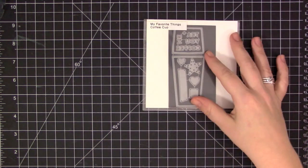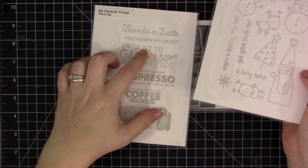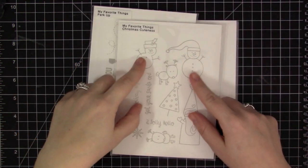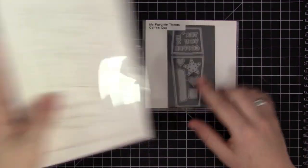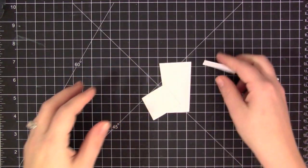I'm going to be using this great Coffee Cup Die-namics. I've had this on my desk for, it feels like forever, waiting to use it. And I'm finally going to put it to use on this card here. I'm going to be pairing it up with the Perk Cup stamp set and the Christmas Cuteness stamp set—one for the sentiment and one for the little snowman image.